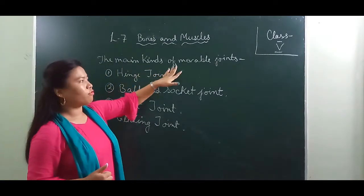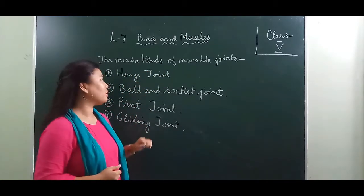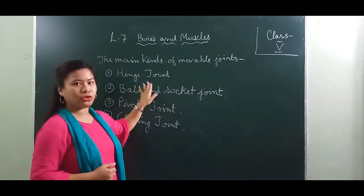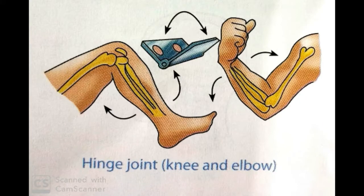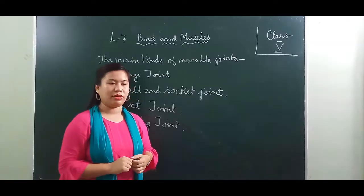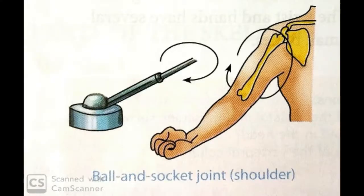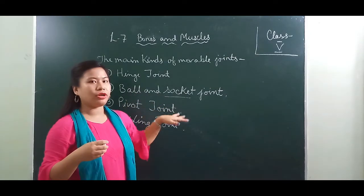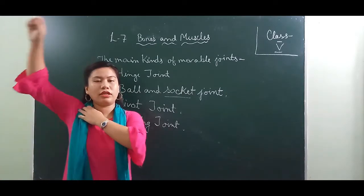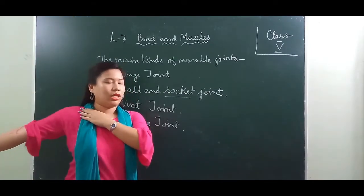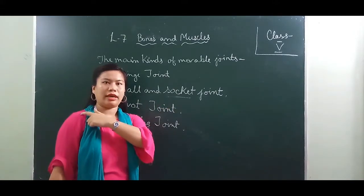The hinge joint allows only back-and-forth movement and is present in the elbow and knee. The ball and socket joint has one bone with a round end like a ball that fits into a hollow socket in another bone, allowing movement in all directions. This type of joint is present in the shoulder and hip.